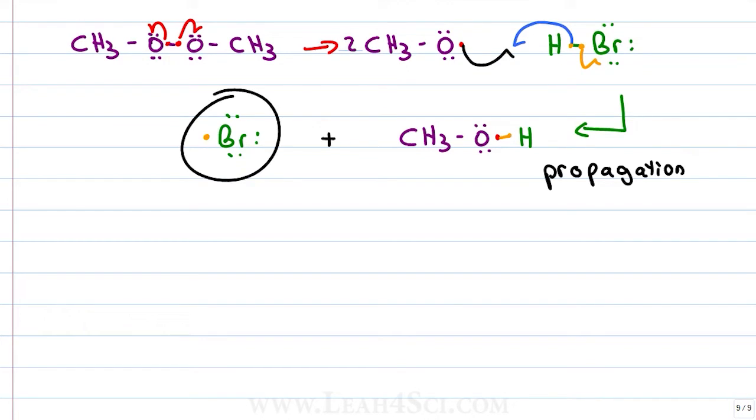And this unstable bromine radical is looking to continue this chain of propagation because it's unhappy as it is. And now finally that alkene comes into play. The alkene has two electrons that are sitting in P orbitals above and below the molecule and that makes it very easy for a bromine radical to attack.